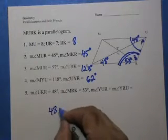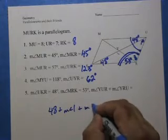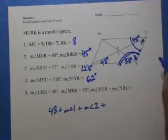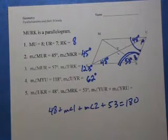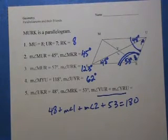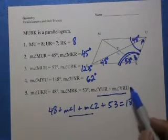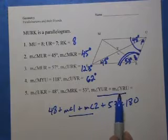So 48 plus the measure of angle 1 plus the measure of angle 2 plus the 53 must equal 180. Well, angle 1 and angle 2 are these two angles. So these are the same. The ones I call angle 1 and angle 2 are the same as angle YUR and angle YRU.